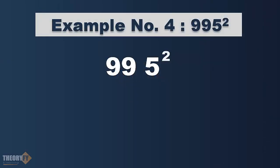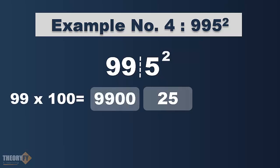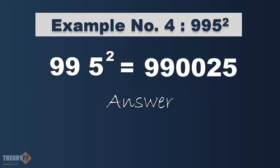Now let's take our final example: the square of 995. First split the number. RHS will always be 25. Multiply 99 with its next number — the next number of 99 is 100. So 99 times 100 is 9900, and that's our final answer: 990025.